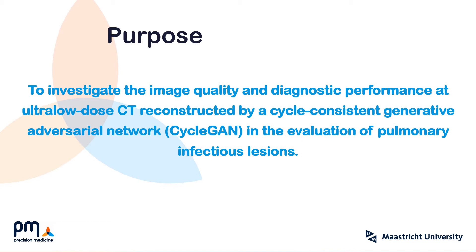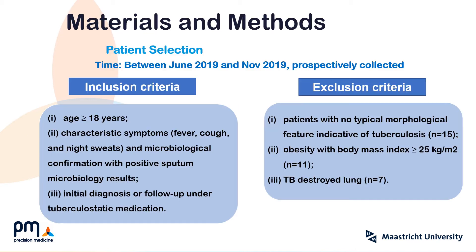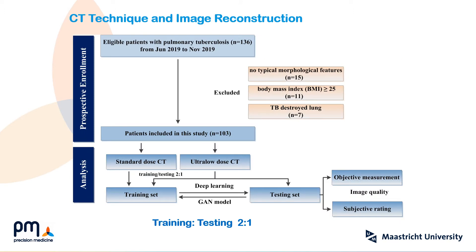So the purpose of the study was to investigate the image quality and diagnostic performance at ultra-low-dose CT reconstructed by a cycle GAN in the evaluation of pulmonary infectious lesions. Between June 2019 and November 2019, a total of 129 consecutive patients with clinical indication of tuberculosis for chest CT were enrolled. All patients underwent standard CT followed immediately by ultra-low-dose CT. A total of 103 cases were randomly divided into training and testing sets in a ratio of about 2 to 1.